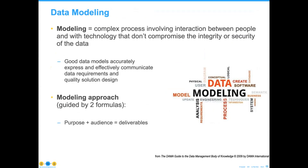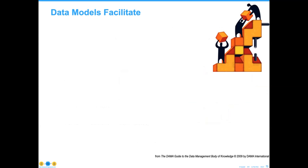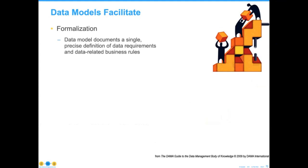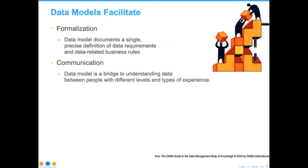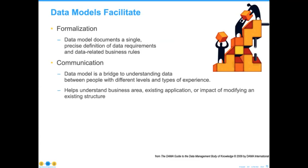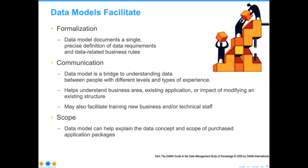Modeling is also a process. We use both the model and the modeling — the same way in architecture. The modeling approach needs to be guided by two specific principles: first, what is the purpose of the model and what is the audience? And second, what sort of deliverables can you put together in the resource amount of time you're trying to work within? These models facilitate all kinds of formalization — they produce a single precise measure, they do communication, and everybody in the project is going to need to know the information that's in the data model.